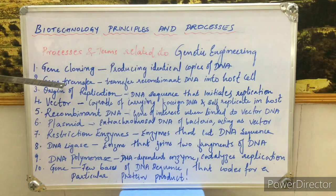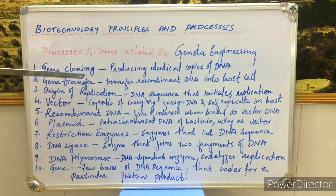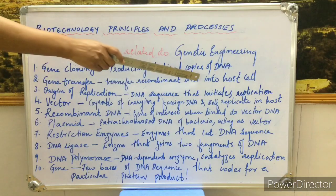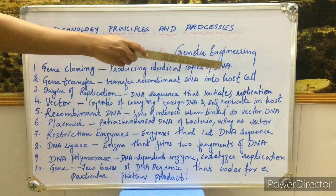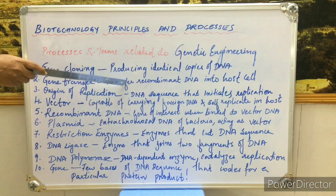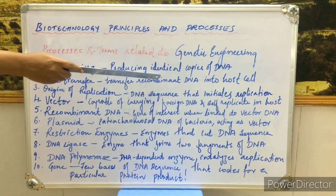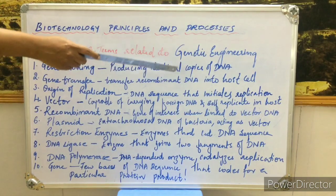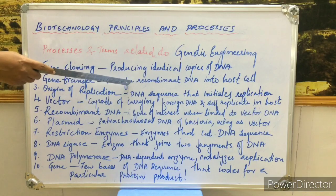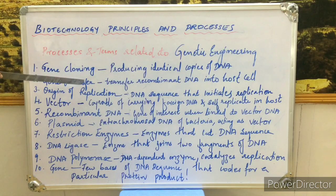Second is gene transfer. Once we have produced identical copies of the gene of interest, we must transfer it into the required organism — the host cell. This is done through gene transfer techniques, which involve transferring the recombinant DNA — the cloned gene of interest attached to the vector DNA — into the host cell to produce the required gene product or character. Gene transfer is defined as the introduction of recombinant DNA into the recipient cell using gene transfer techniques.